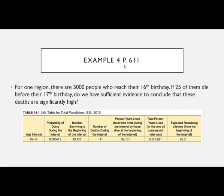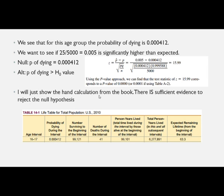We're going to look at page 611, example 4. For one region, there are 5,000 people who reach their 16th birthday. If 25 of them die before their 17th birthday, do we have sufficient evidence to conclude that these deaths are significantly high? We're just going to do a hand calculation. For this age group, the probability of dying is the population parameter of 0.000412. We want to know if 25 out of 5,000 kids — which is 0.005 — is significantly higher than expected. So our null is that the probability of dying equals the population parameter, and the alternate is that the probability of dying is greater than that null value.